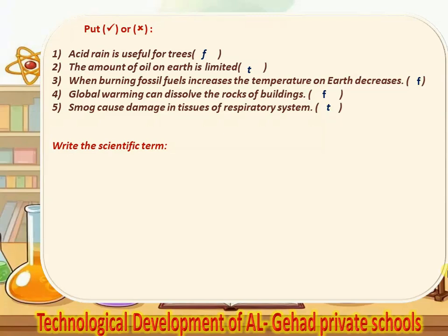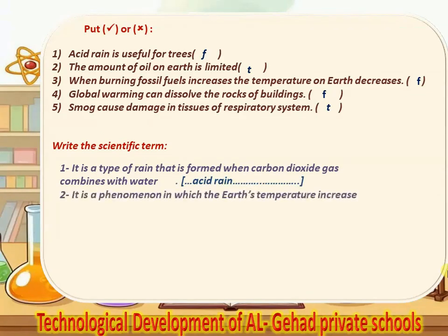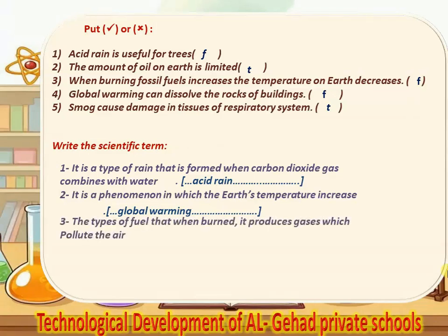Write the scientific term. Number 1, it's a type of rain that is formed when carbon dioxide combines with water — Acid rain. Number 2, it's a phenomenon in which the earth's temperature increases — Global warming. Number 3, the type of fuel that when burned produces gas which pollutes the air — Fossil fuel.